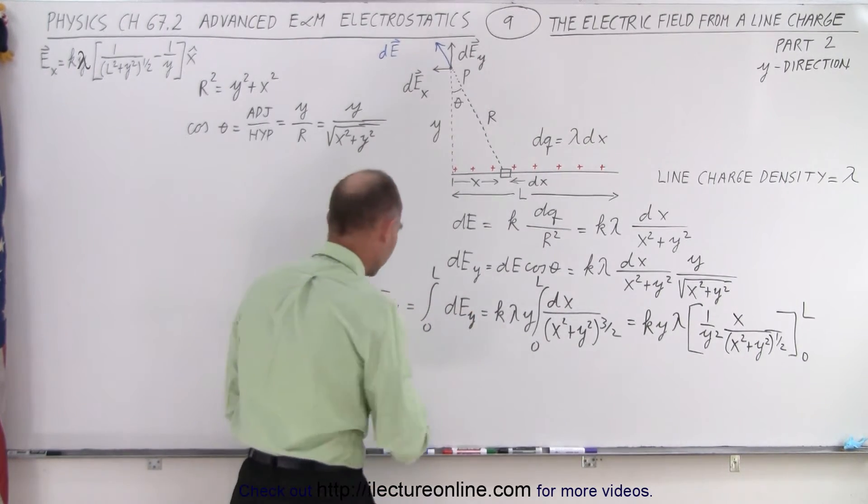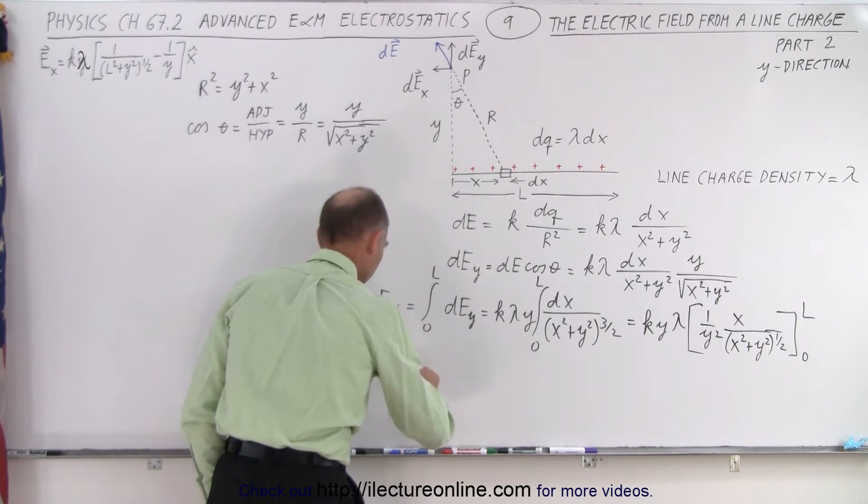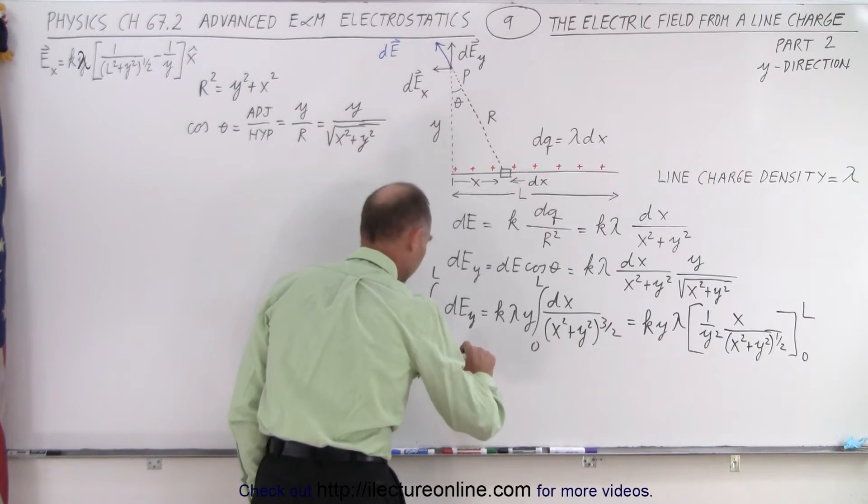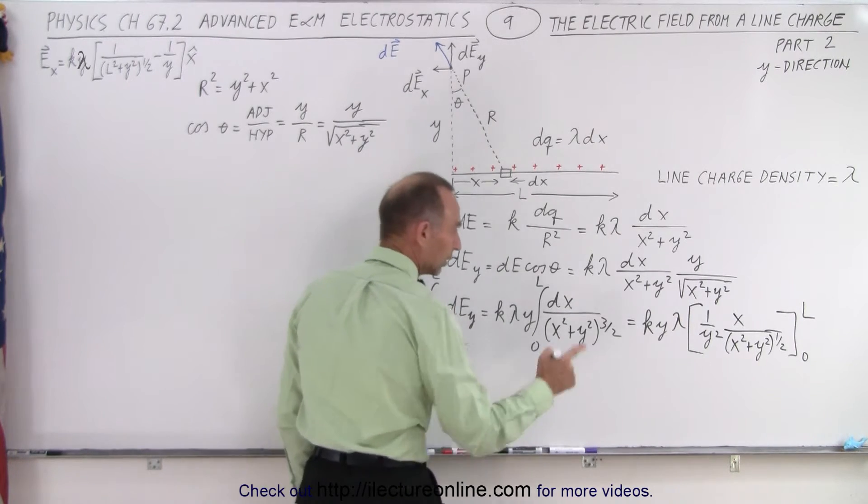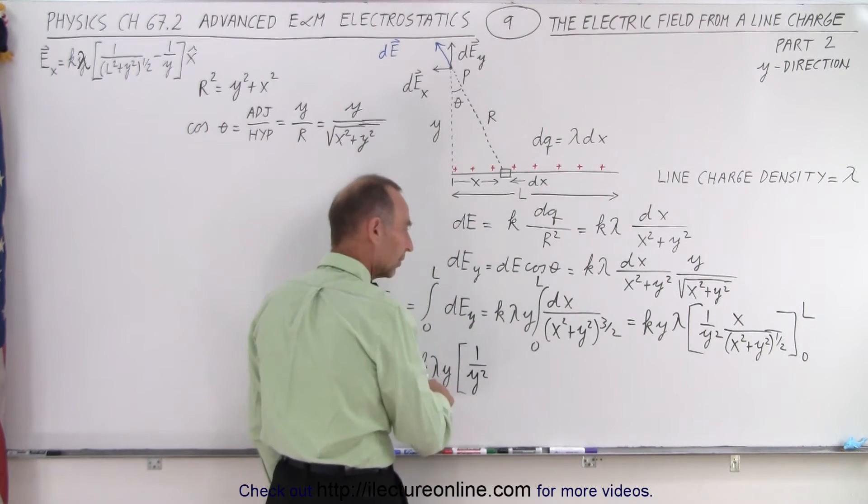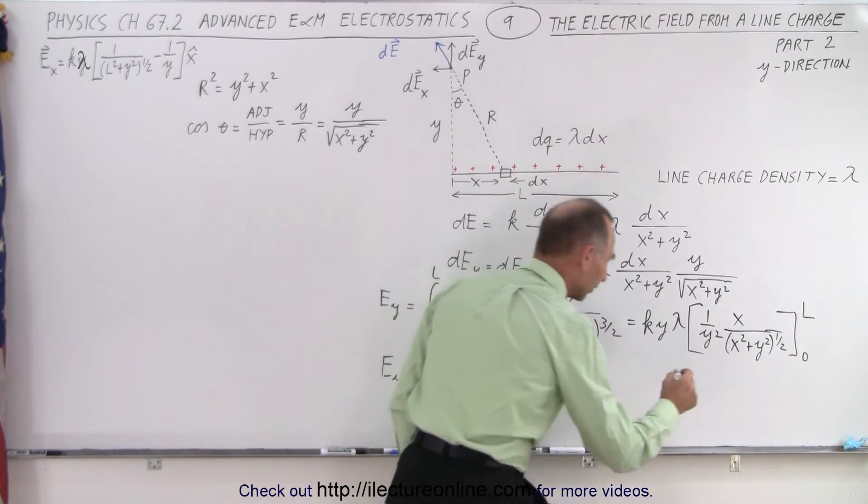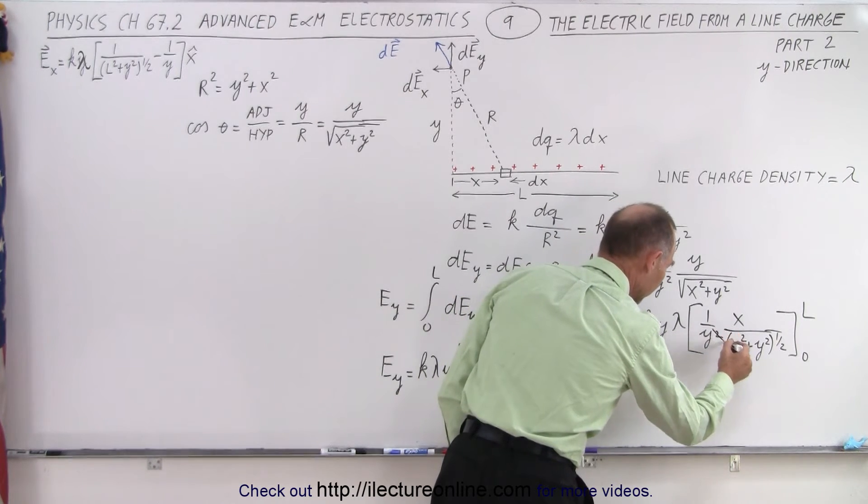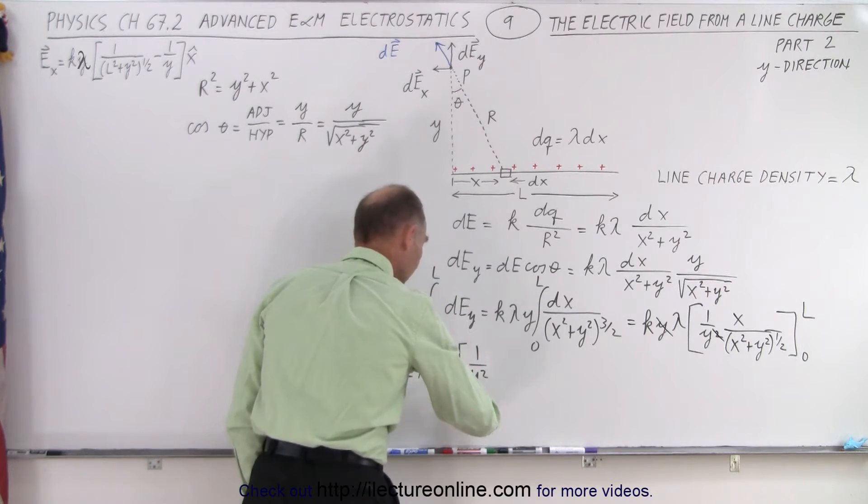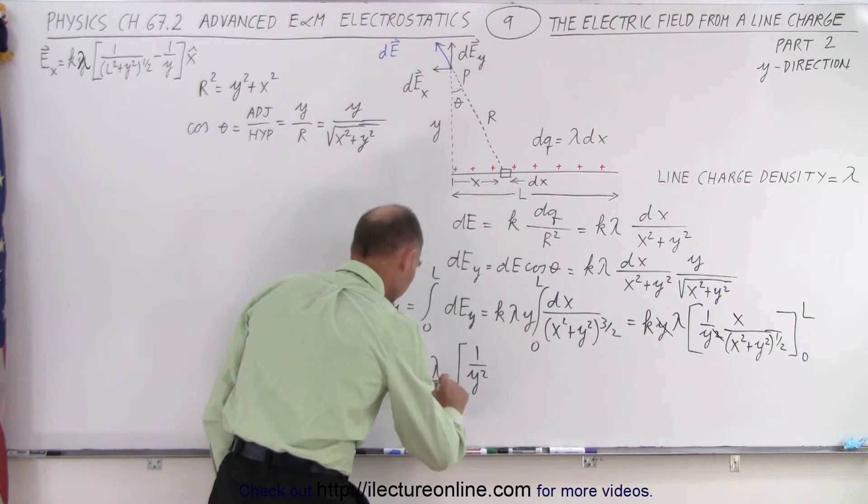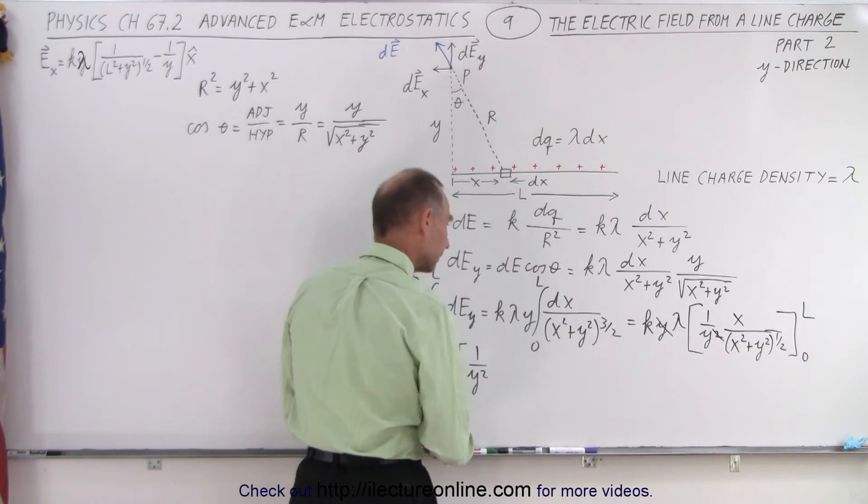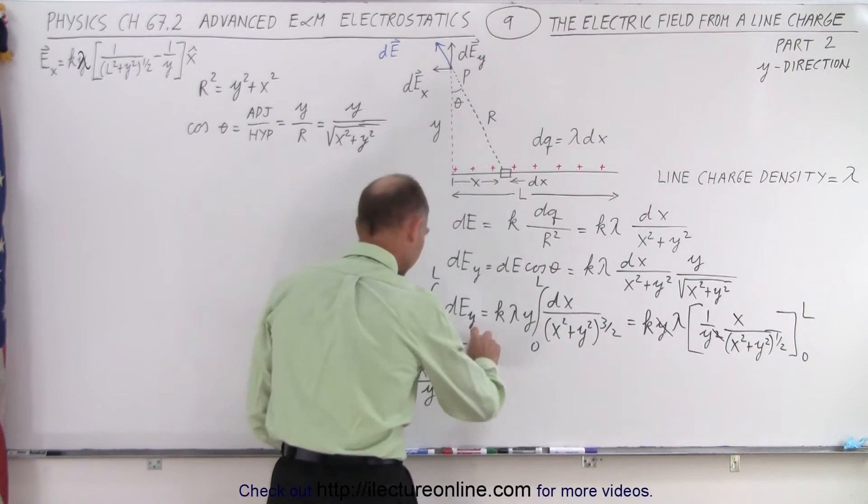So now we're going to plug in the limits. So E in the y direction is equal to k lambda y times, when I plug in the upper limit, for x, I get 1 over y squared. Matter of fact, this cancels out, doesn't it? I can get rid of this, and I can write this better. That way we don't have to worry about it. So I'm going to simplify things a little bit by writing it like that.